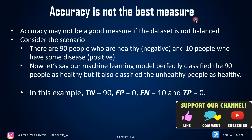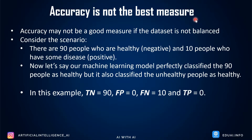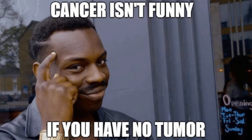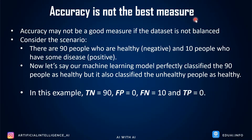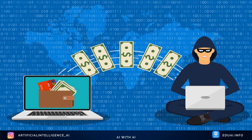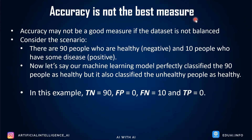Why is accuracy not the best measure always? Imagine when the dataset is not balanced — when it is biased. Consider a cancer dataset: out of a thousand patients coming for checkups, hardly one or two will have a tumor detected — that's a positive result. Similarly, in online transactions, out of a hundred thousand transactions only one or two might be fraudulent. This is an imbalanced dataset where negatives vastly outnumber positives — maybe 99.99% negative and only a tiny fraction positive.